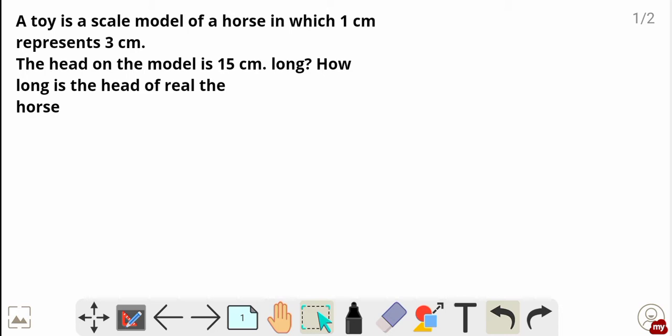A toy is a scale model of a horse in which one centimeter represents three centimeters. It's a given condition. The head on the model is 15 centimeter long. How long is the head of the real horse?